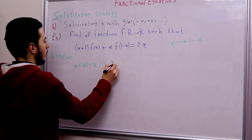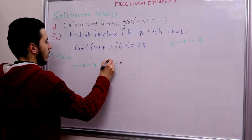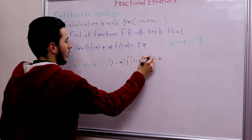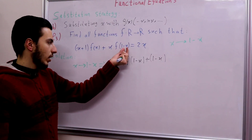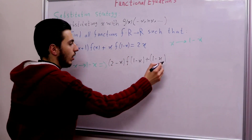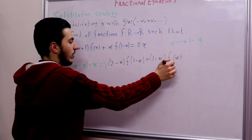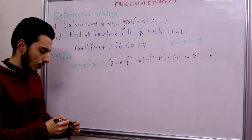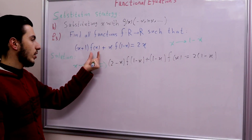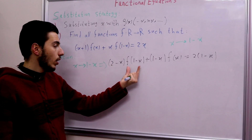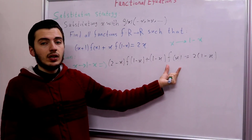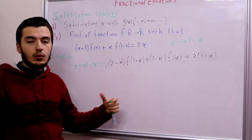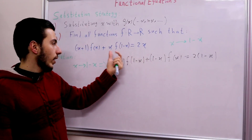After substituting x with 1 − x, we now have (2 − x)·f(1 − x) + (1 − x)·f(x) = 2(1 − x), since 1 − (1 − x) = x. So now we have a second equation linking f(1 − x) to f(x), giving us a system of two linear equations that we can solve.